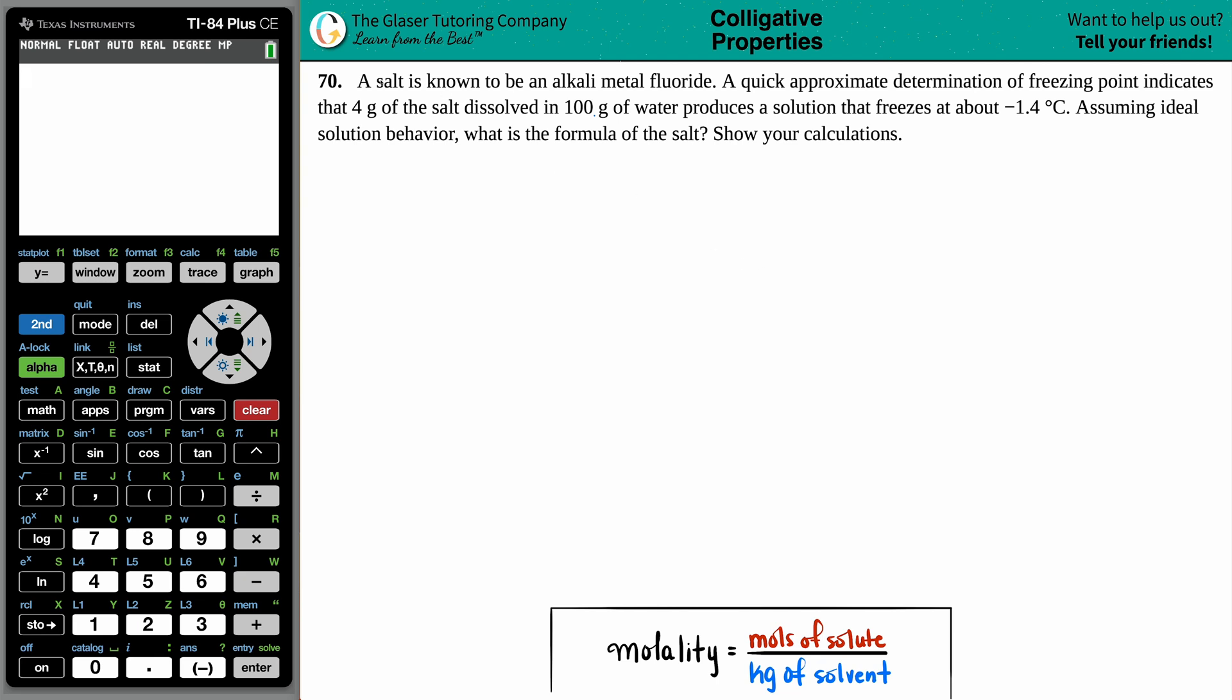Problem 70: A salt is known to be an alkali metal fluoride. A quick approximate determination of freezing point indicates that 4 grams of the salt dissolved in 100 grams of water produces a solution that freezes at about negative 1.4 degrees Celsius. Assuming ideal solution behavior, what is the formula of the salt? Show your calculations.